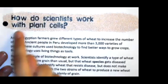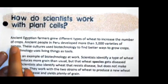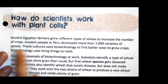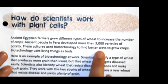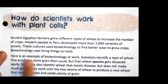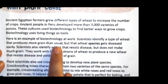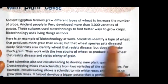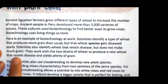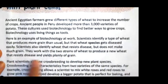How do scientists work with plant cells? Ancient Egyptian farmers grew different types of wheat to increase the number of crops. Ancient people in Peru developed more than 3,000 varieties of potato. These cultures used biotechnology to find better ways to grow crops. Biotechnology uses living things as tools. Scientists identify a type of wheat that produces more grain than usual, but that wheat species gets diseased easily. Scientists also identify wheat that resists disease but does not make much grain. They work with the two strands of wheat to produce a new wheat that resists disease and yields plenty of grain.